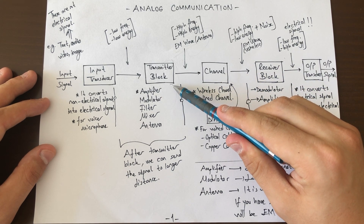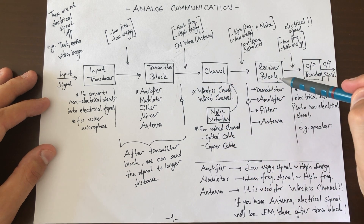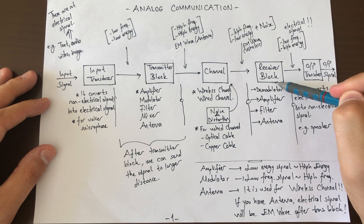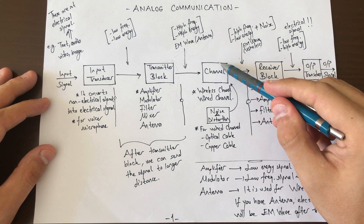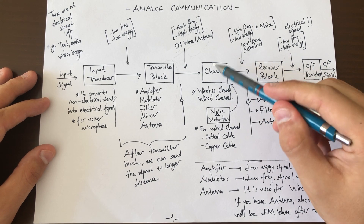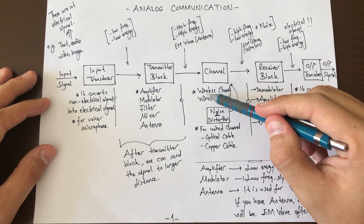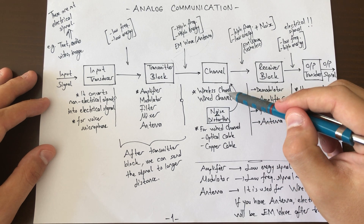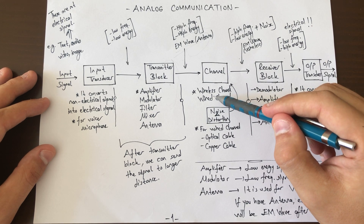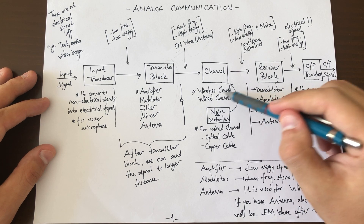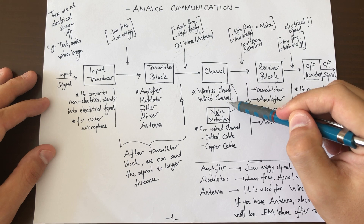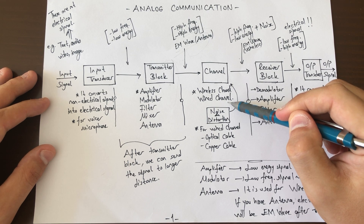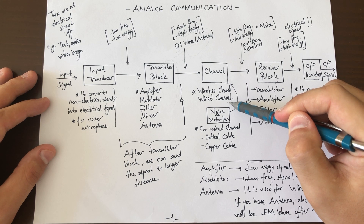Between the transmitter block and receiver block we use a channel. There are two types of channel: wireless channel and wired channel.